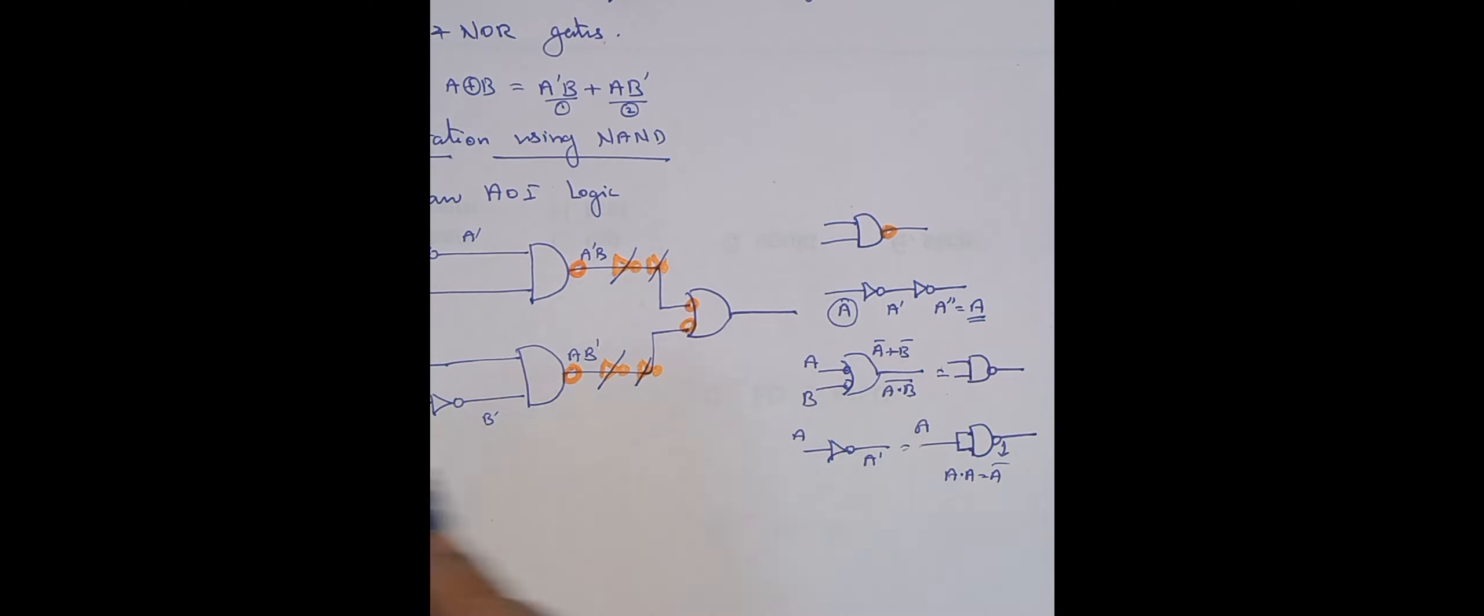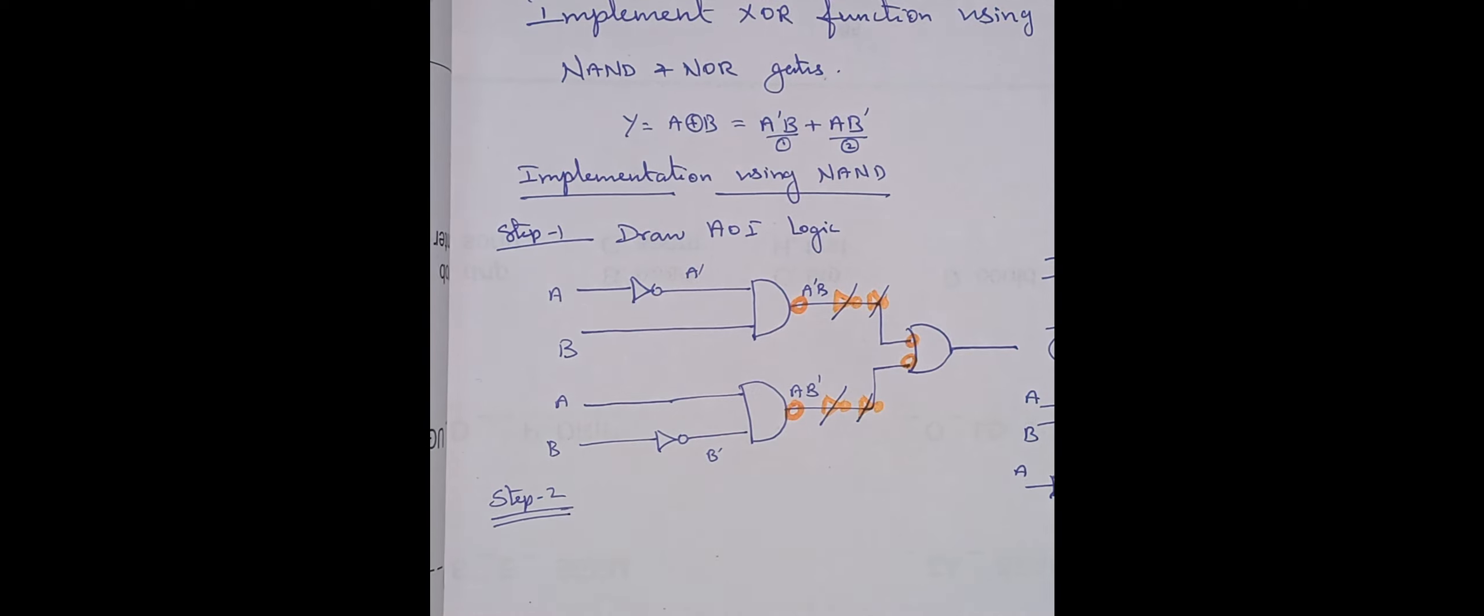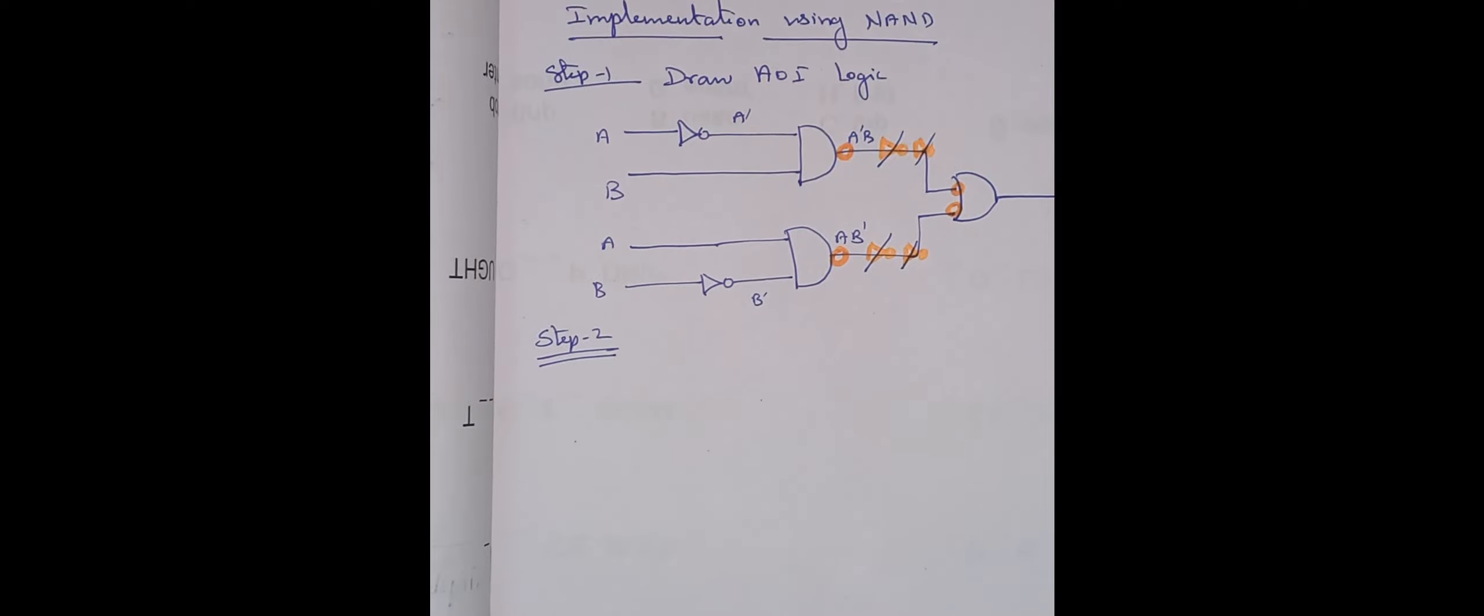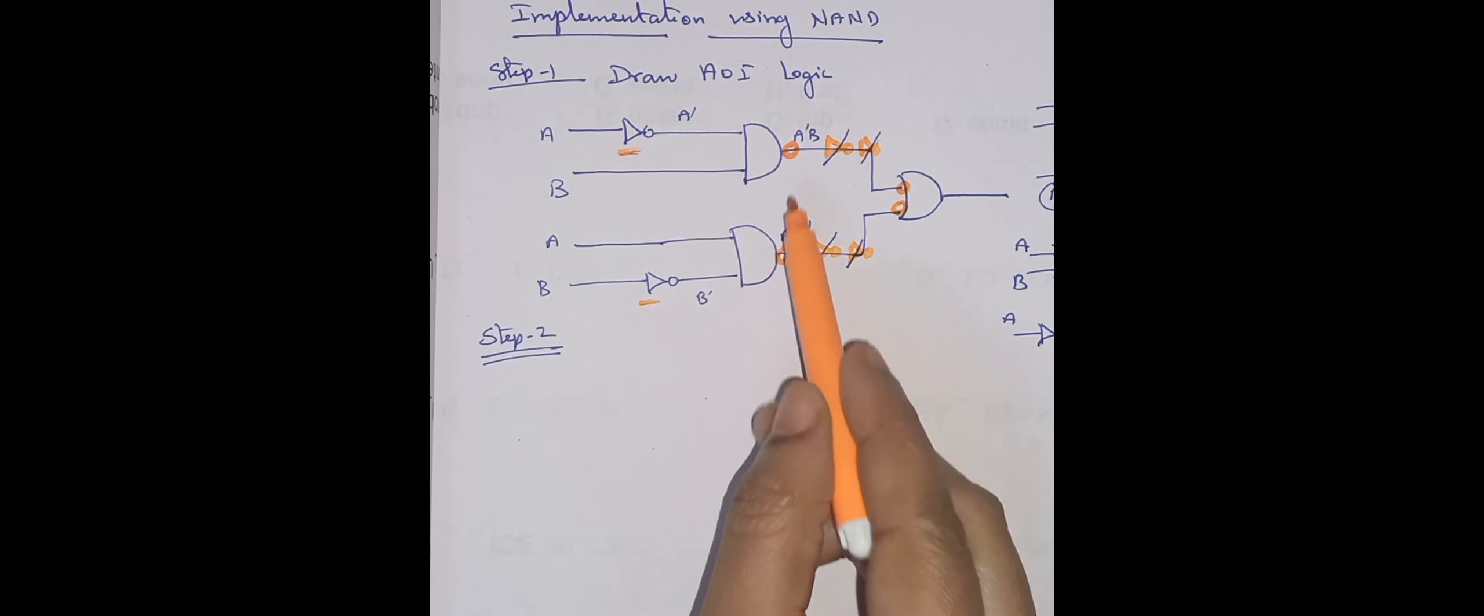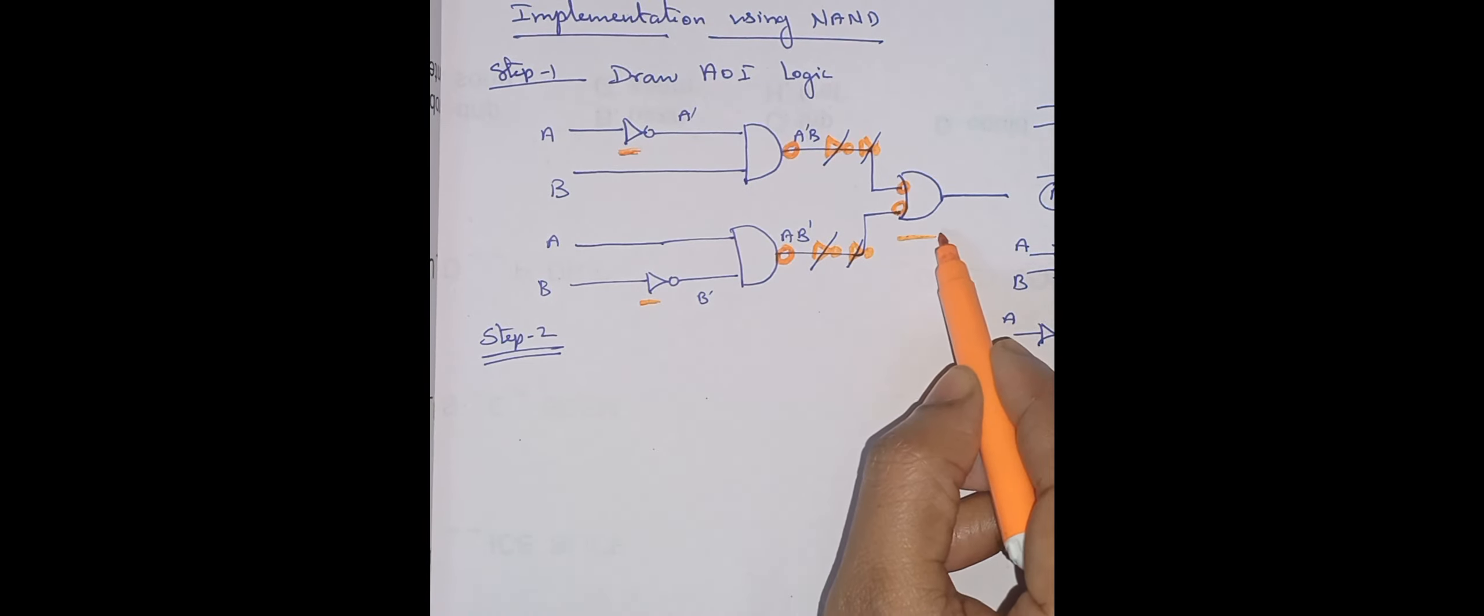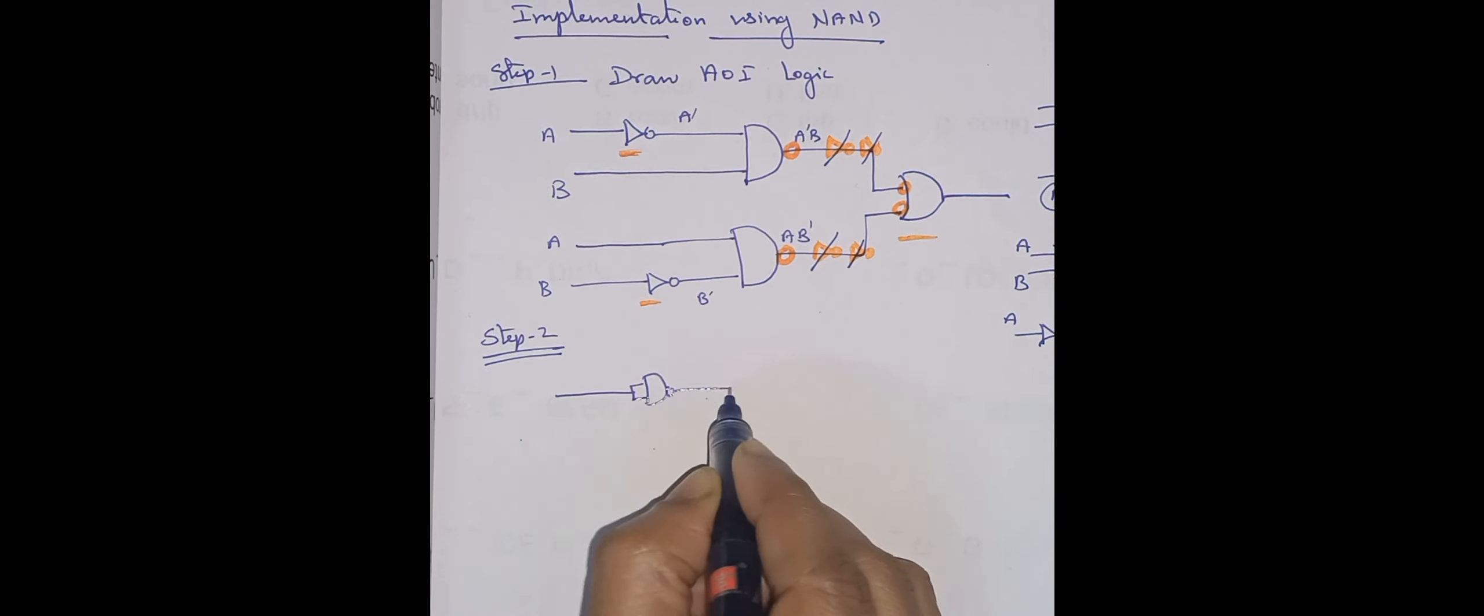Now I redraw. Step 2: I redraw by replacing all these gates by NAND gates. See here, what are the things to be changed? This is to be replaced by NAND gate. This is to be replaced by NAND gate. It is already looking like a NAND gate, so no need, draw as it is. And this is to be redrawn as NAND gate.